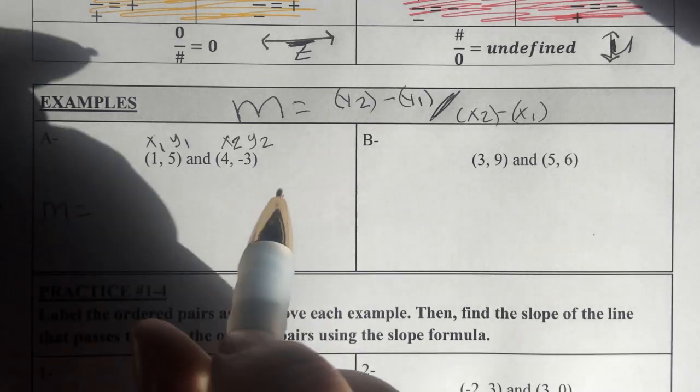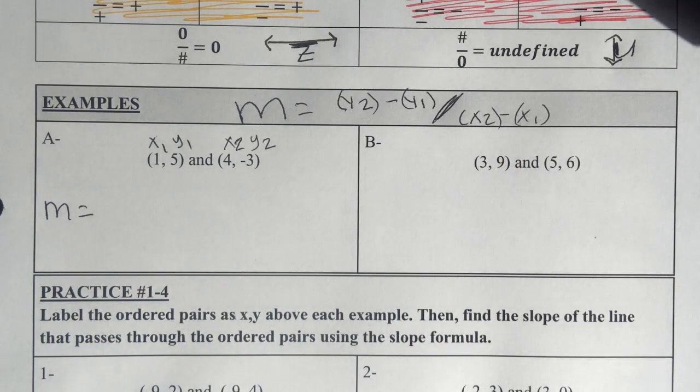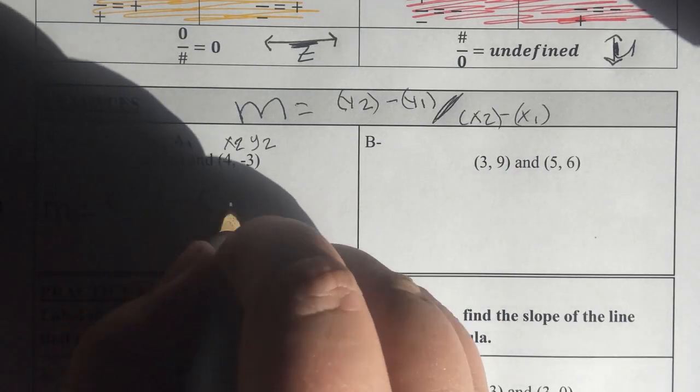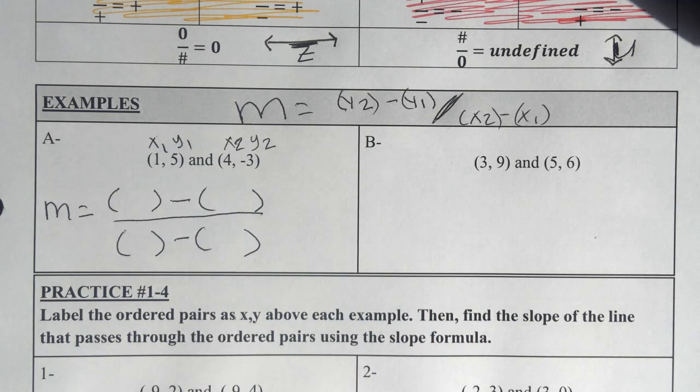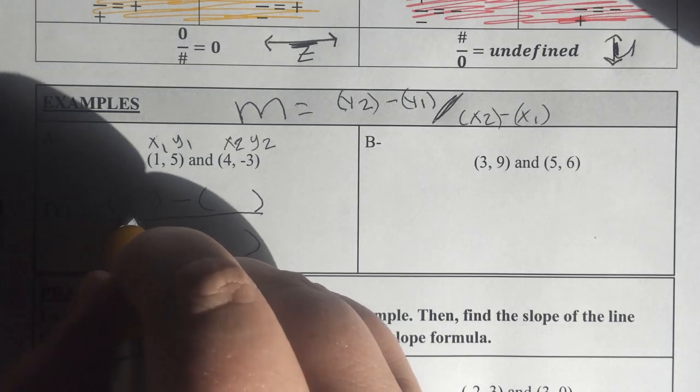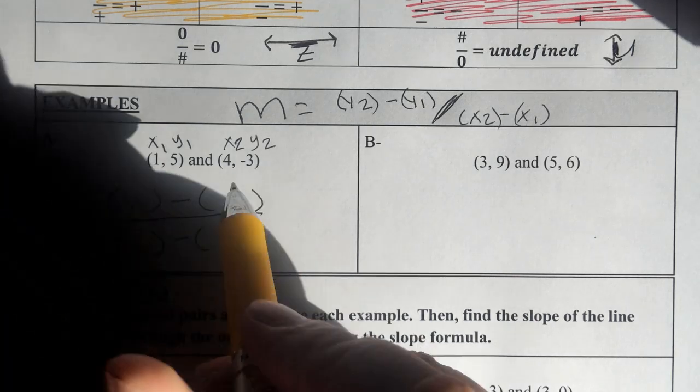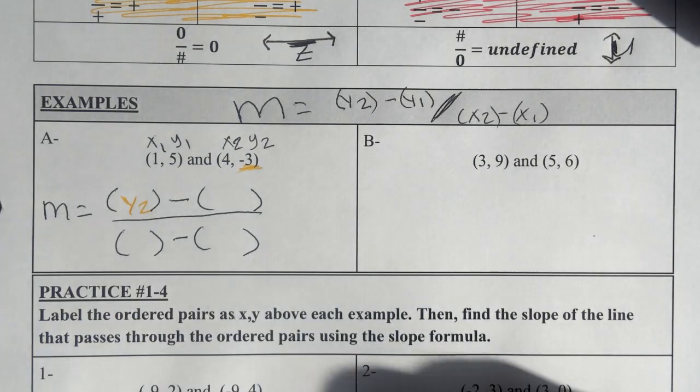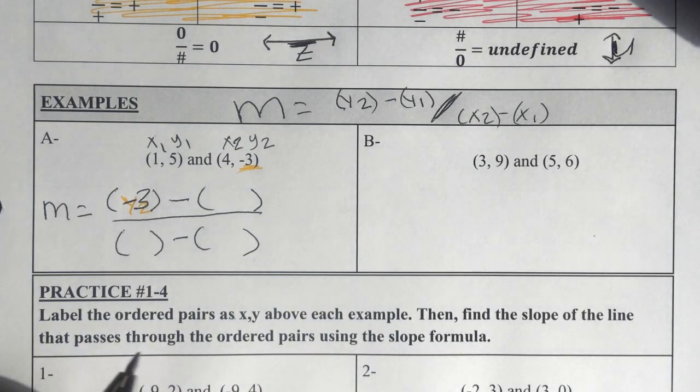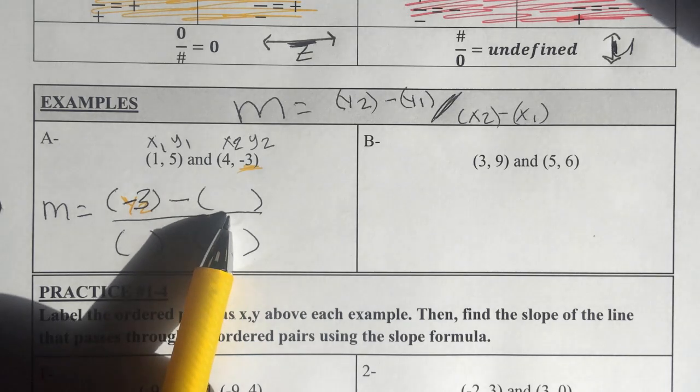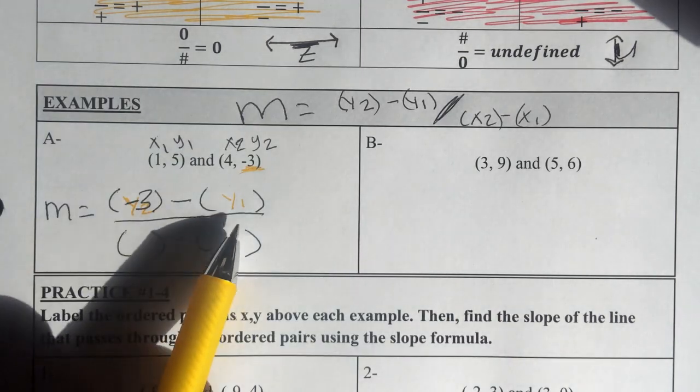Now I'm rewriting the formula m equals, and instead of writing the y2 and the y1, the x2 and the x1, I'm just going to only leave the parentheses. So now I have parentheses minus parentheses over parentheses minus parentheses. Now this first set of parentheses is in place of y2 from the formula, and y2 happens to be negative 3. So I'm going to put a negative 3 in that bubble.